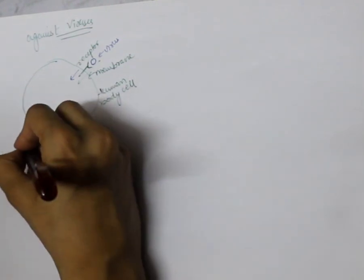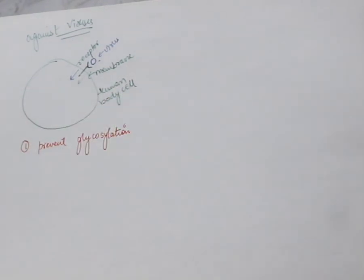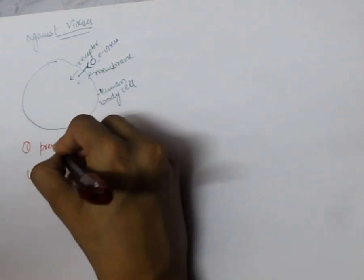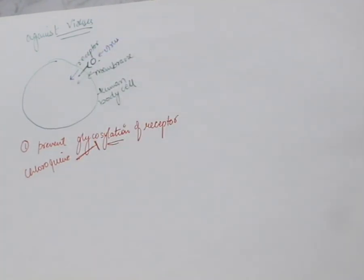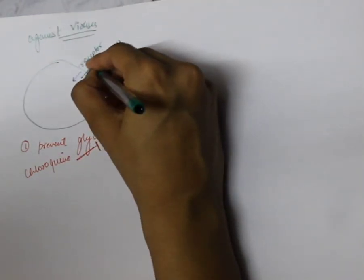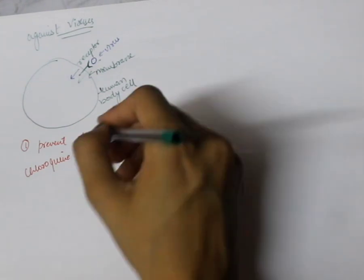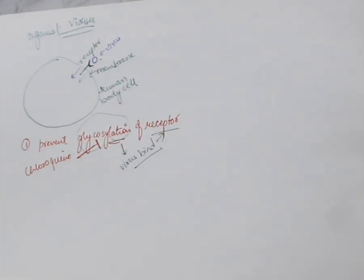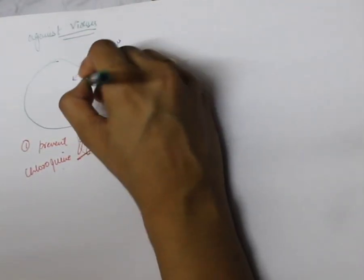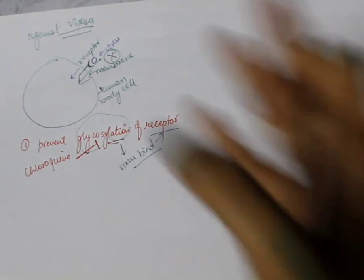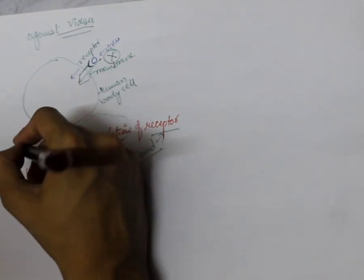One mode of action against viruses is to prevent glycosylation. Chloroquine blocks the glycosylation of the receptor on the cell membrane. If there is no glycosylation, the virus cannot bind to this receptor. If the virus cannot bind, it will not enter into the cell. If it does not enter the cell, it will not make multiple copies and eventually will not survive in the human body.